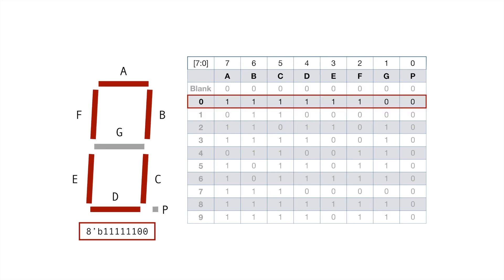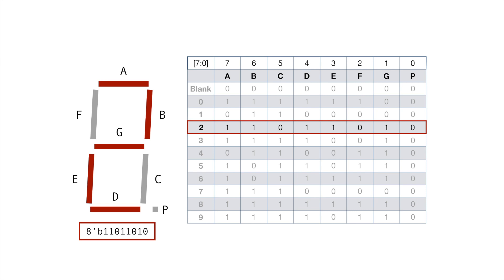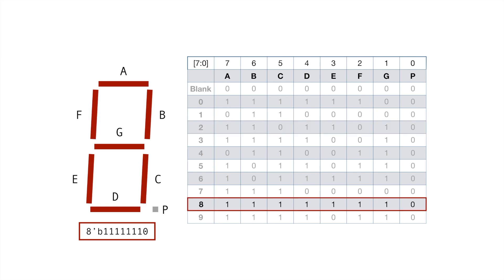Let's look at how some of these codes build out. For a zero, you're going to have A, B, C, D, E, F lit up and G is not lit up. So that's an eight-bit register — 1,1,1,1,1,1,0,0. For a two, we could do 1,1,0,1,1,0,1,0. And for an eight, we would light up all the bits except for the period — so it's all ones down to one, then zero.